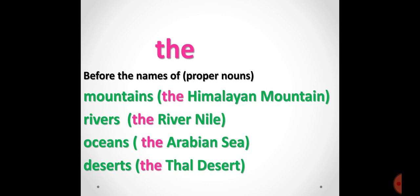For example, the Himalayan Mountain — Himalayan Mountain is the name of a mountain, and since this is a proper noun, we use 'the' before Himalayan Mountain. Similarly, if we talk about any river and there is the name of any river in a sentence, we always use 'the' before the name of the river. For example, the river Nile — whenever any river is mentioned, we always use 'the' before the name of the river.